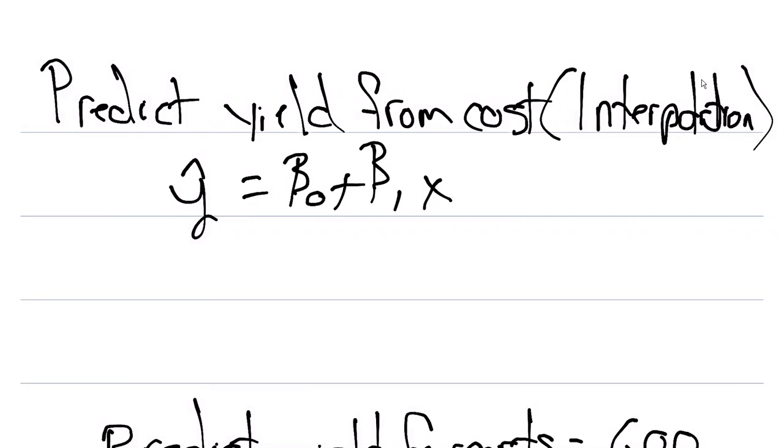In this case, y hat is going to be the yield and x is going to be the cost that farmers put into producing that yield.